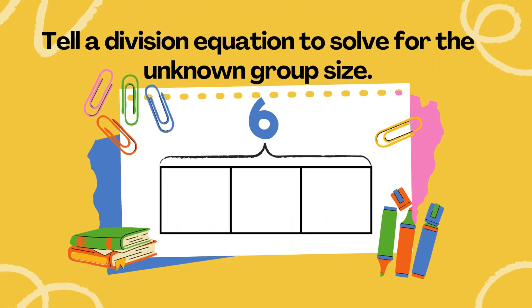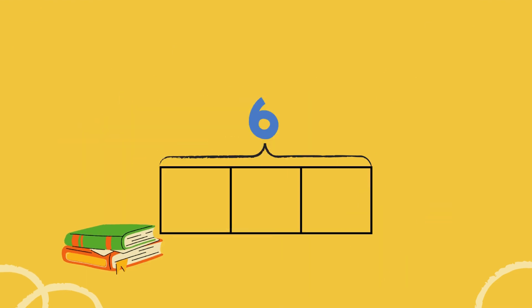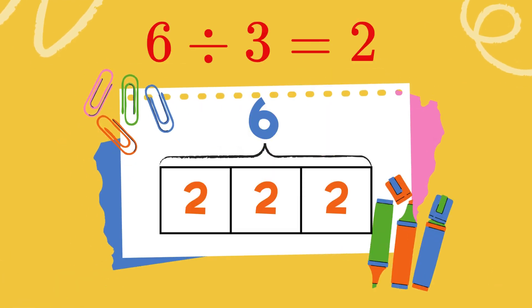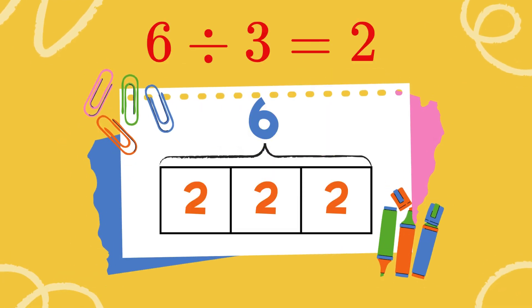Tell a division equation to solve for the unknown group size. 6 divided by 3 equals 2.